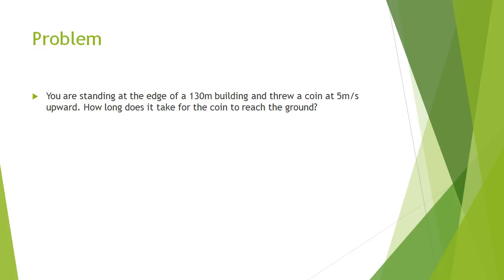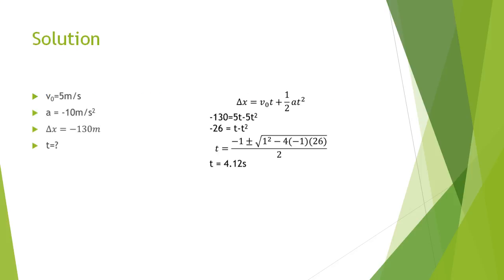So here is the solution to this problem. Well you know that you threw the coin upwards at the initial velocity of five meters per second, so v0 would equal to five meters per second because the direction is up so it's positive.